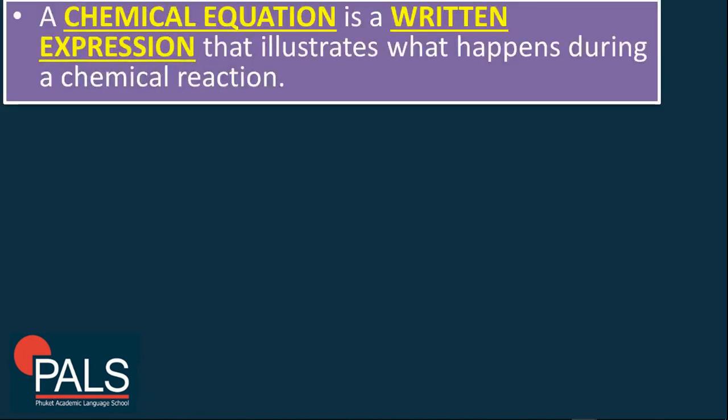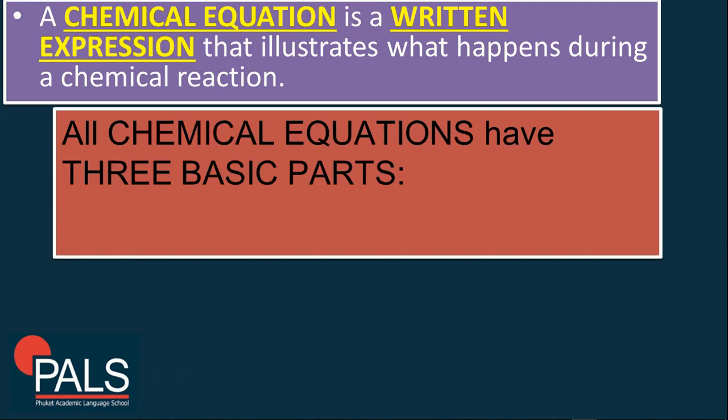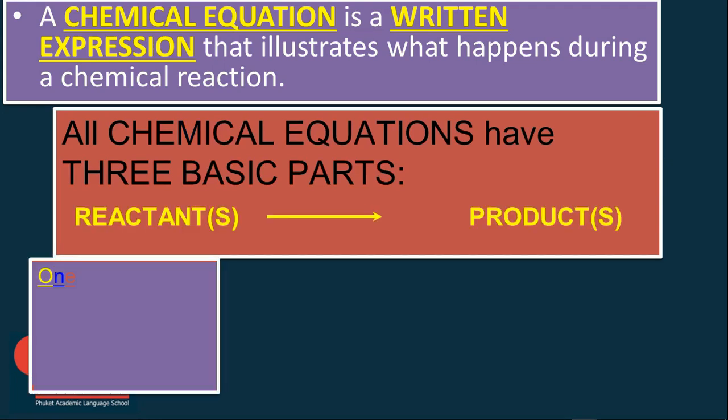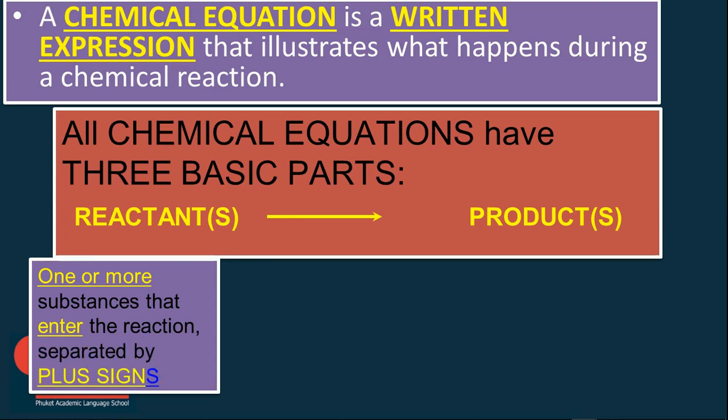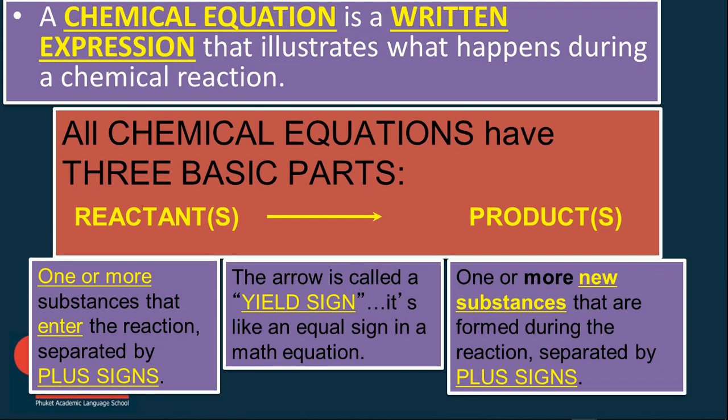A chemical equation is a written expression that illustrates what happens during a chemical reaction. All chemical equations have three basic parts: the reactants and the products. Reactants are one or more substances that enter the reaction, separated by a plus sign. And you have here this arrow, which is called a yield sign. It means like an equal sign in a math equation, that something is being produced.